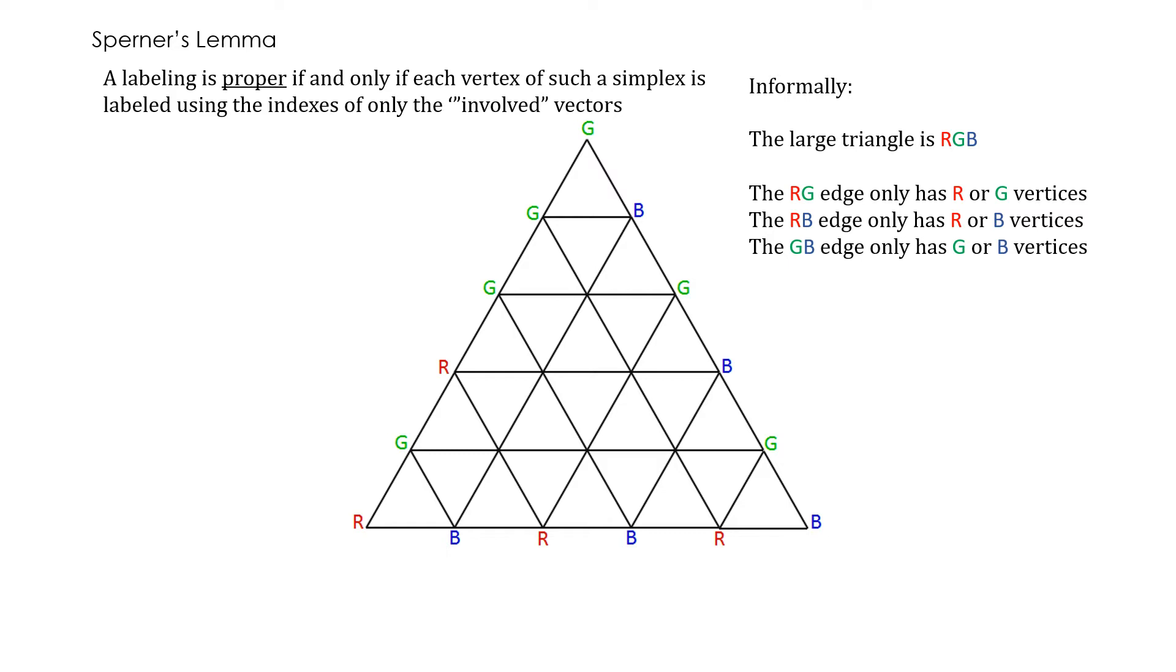So consider this large g edge, these vertices can only be labeled b or g. And likewise for this edge, the large triangle's edge, these vertices can be labeled only b and g. This is the big triangle which has r, g and b labels. So this is a proper labeling.